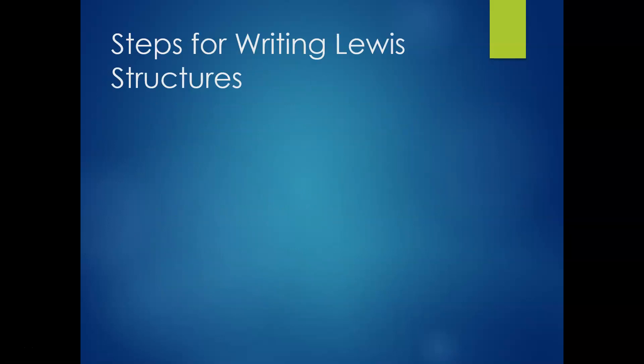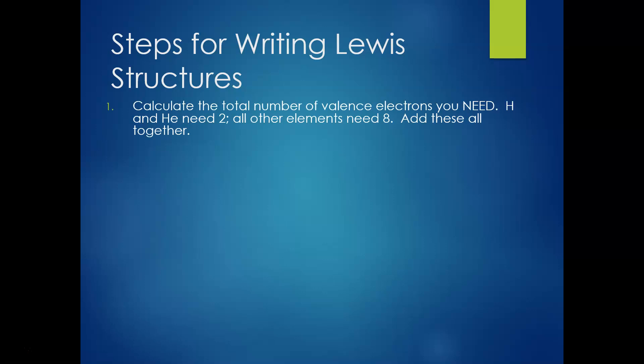Let's talk about our steps to writing Lewis structures. In step number one, you're going to calculate the total number of valence electrons you need, which I'll refer to as your 'need.' Hydrogen and helium need two; all other elements need eight. You multiply if you have multiple of something and add them all together to get your total need of electrons.